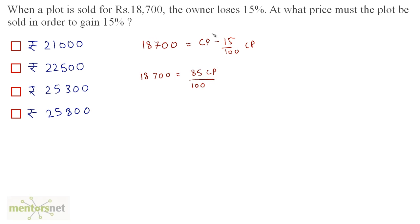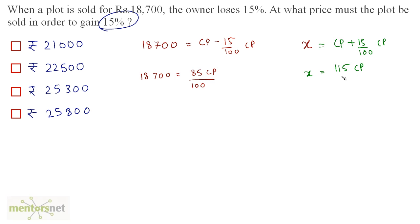Next we need to find the selling price to achieve a profit of 15%, not a loss. Let the new selling price be X rupees. X equals the cost price plus 15% of the cost price, so X equals 115CP/100.